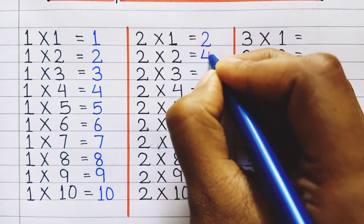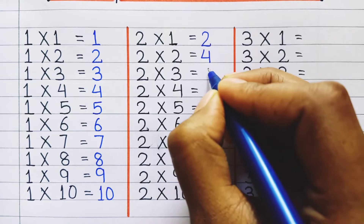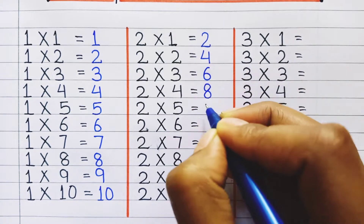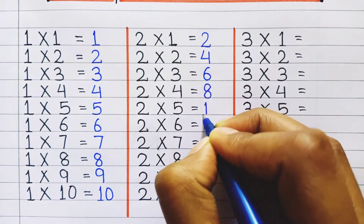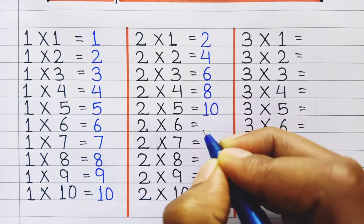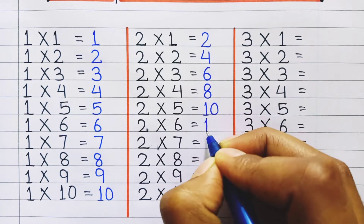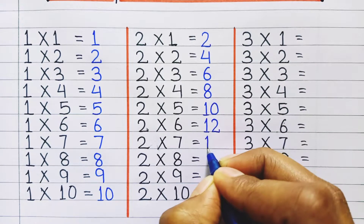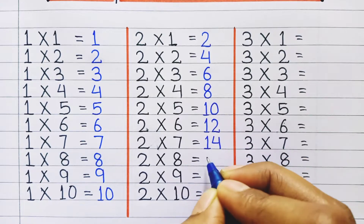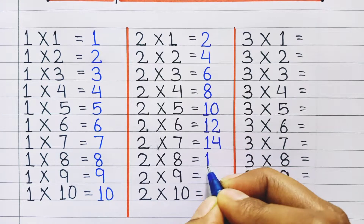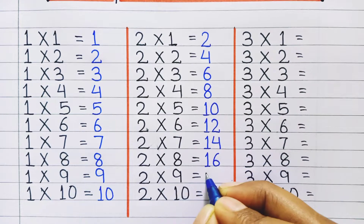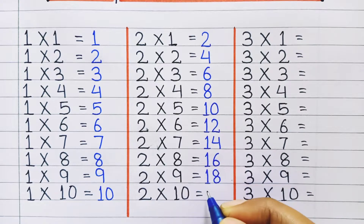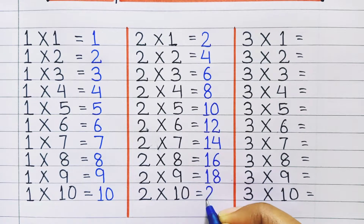2 two's a 4, 2 three's a 6, 2 four's a 8, 2 five's a 10, 2 six's a 12, 2 seven's a 14, 2 eight's a 16, 2 nine's a 18, 2 ten's a 20.